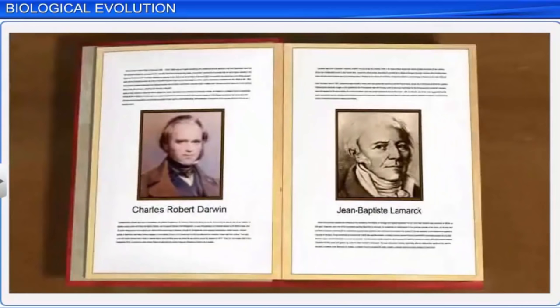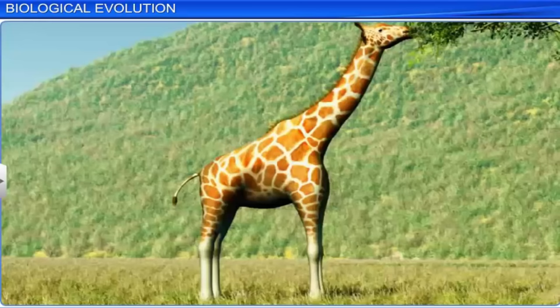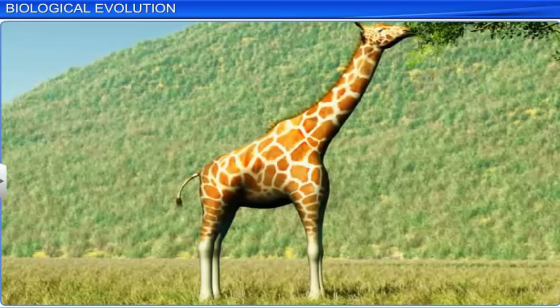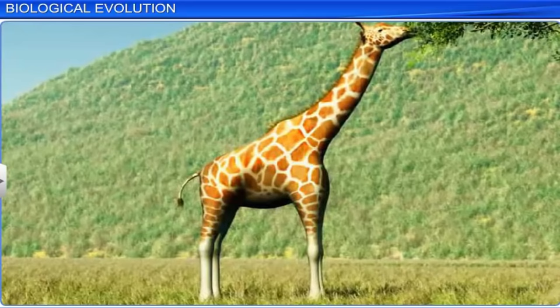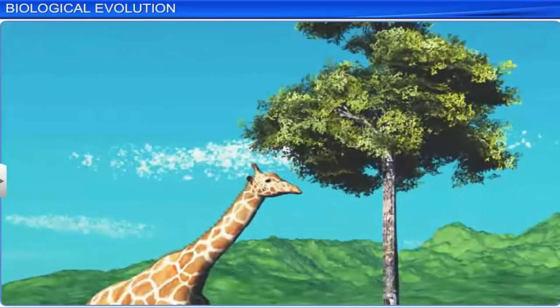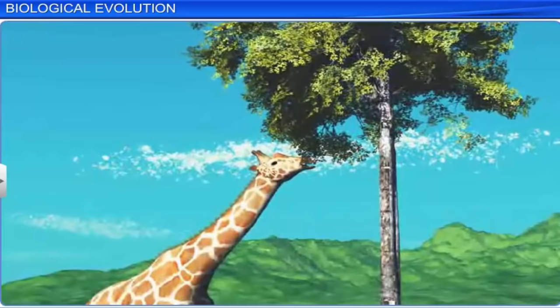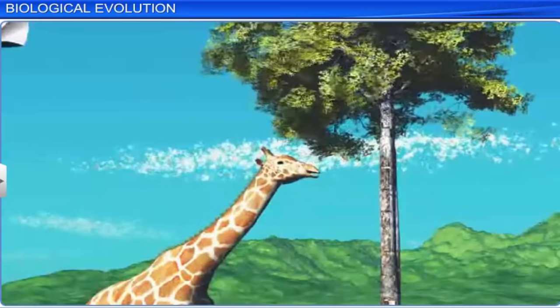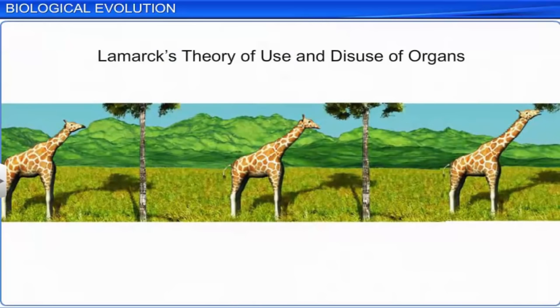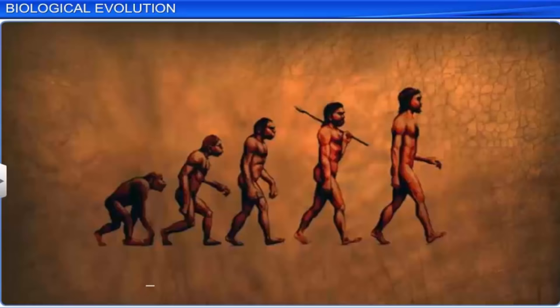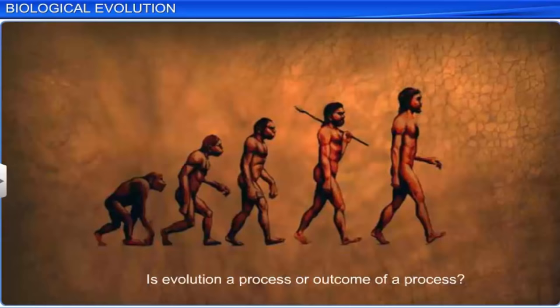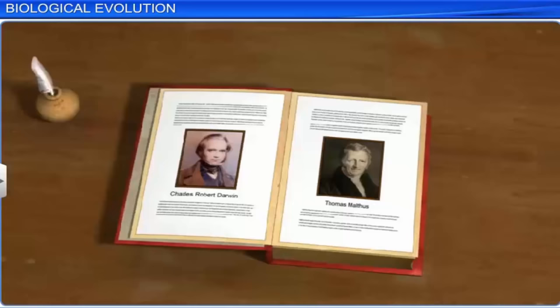Darwin refuted the old theory of evolution by the use and disuse of organs propounded by French naturalist Jean-Baptiste Lamarck. Lamarck had conjectured that giraffes had adapted themselves and elongated their necks while trying to eat the leaves of tall trees, passing on the character of a long neck to future generations. However, Lamarck's theory about the use and disuse of organs is not accepted anymore. Evolution has always generated a lot of debate. In fact, no one has been able to say with certainty whether evolution is a process or an outcome of a process like natural selection.